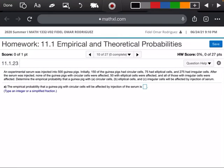All right, so guys, this is number 10 out of 11.1, and it says an experimental serum was injected into 500 guinea pigs. Initially 150 of the guinea pigs had circular cells, 75 had elliptical cells, and 275 had irregular cells.